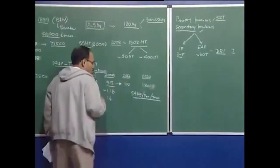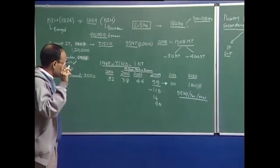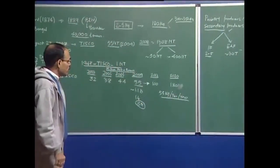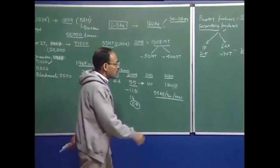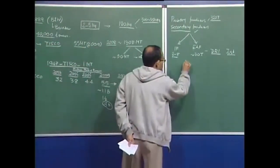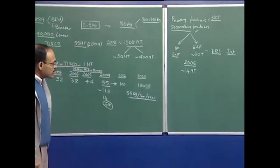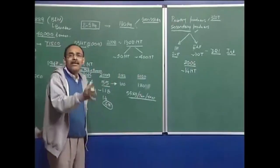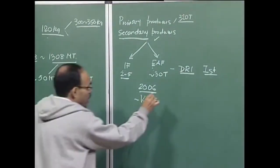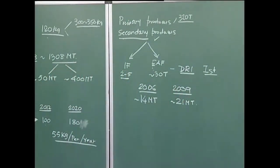As for our rank in steel production, in 2009 we were the fifth largest steel producer, with China at the top, then Russia, Japan, Brazil, and India at fifth. This ranking is steadily going to improve. As far as DRI is concerned, around 2006 we produced about 14 million tons of DRI, and in 2009 the DRI production was somewhere around 20 to 21 million tons.